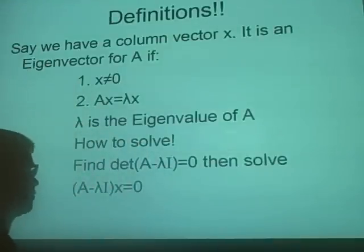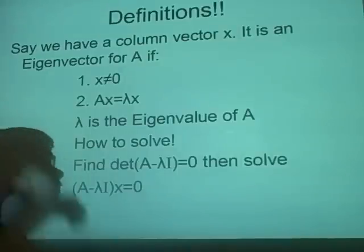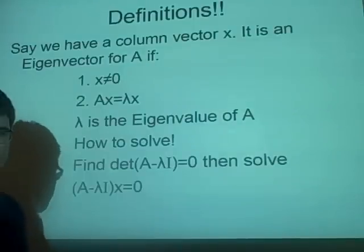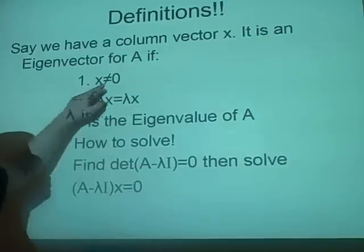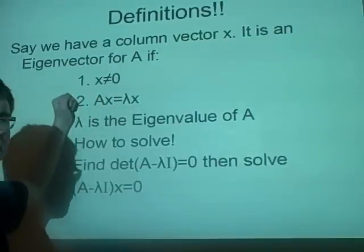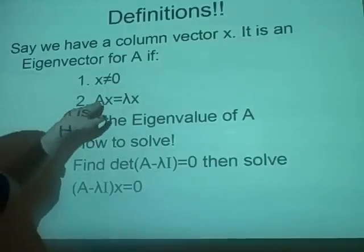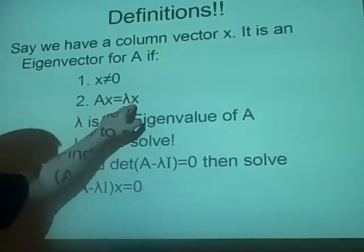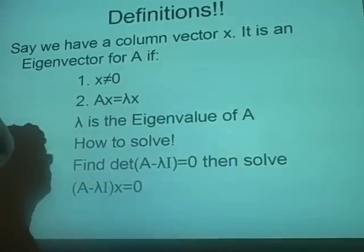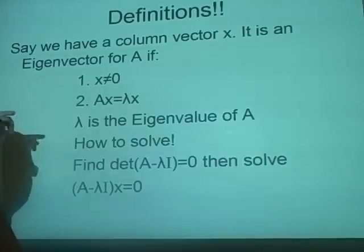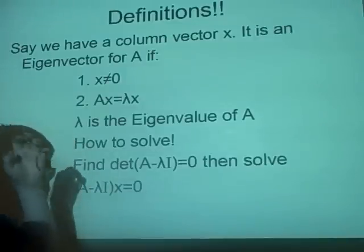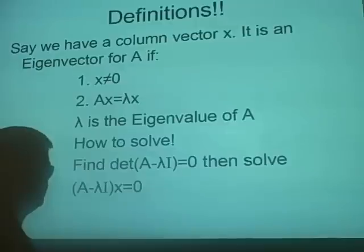Starting with definitions: a column vector x is an eigenvector for a matrix A if x doesn't equal zero, and if the matrix times the vector equals a scalar times the vector. That scalar, lambda, is the eigenvalue for A. We have examples to make it simpler to understand later.